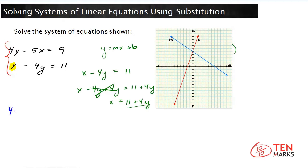So if you have 4y minus 5x equals 9, substitute in 4y minus 5 times x, which you know is 11 plus 4y, equals 9. Now continue solving by expanding the parentheses using the distributive property. So you get 4y minus 5 times 11, which is negative 55.